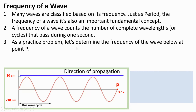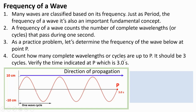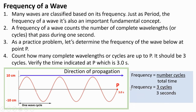As a practice problem, let's determine the frequency of the wave below at point P. Count how many complete wavelengths or cycles are up to P — it should be three cycles: one, two, three. Now verify the time indicated at P, which is three seconds. So by definition, frequency is the number of cycles divided by the total time. That will be three cycles over three seconds, or one cycle per second. So that's the frequency of this wave.